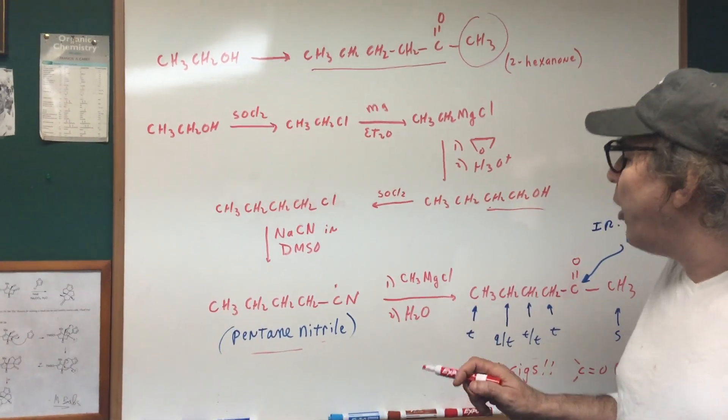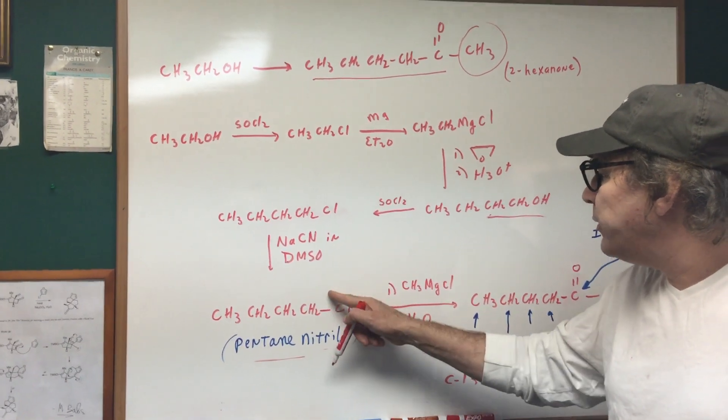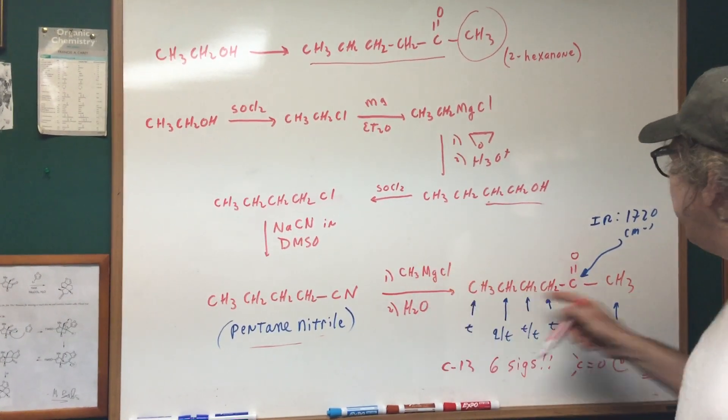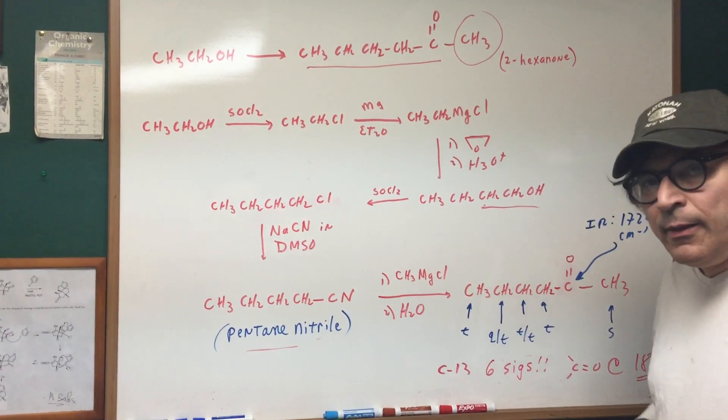Once you got this, I hope you can see if you treated this with a Grignard, that would break the N off, and then you make it into a carbonyl and add on the Grignard, and that would give you your product, 2-hexanone.